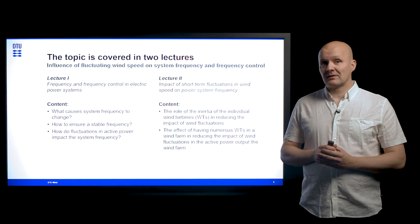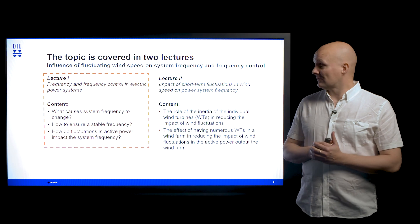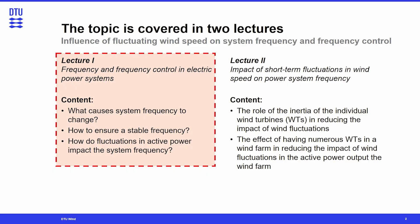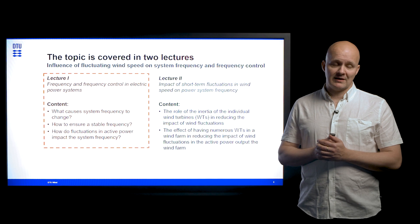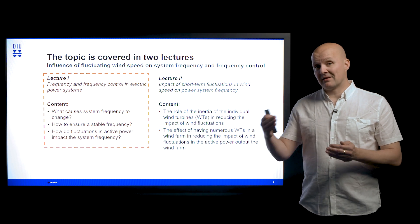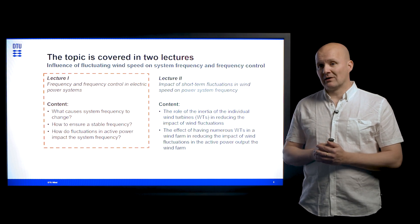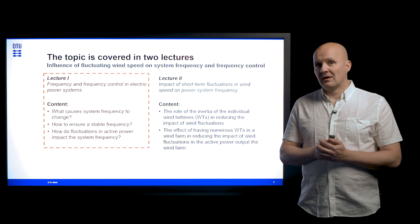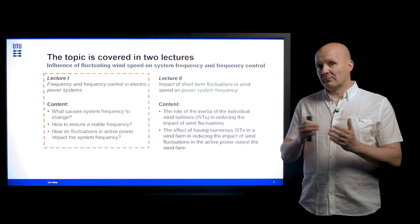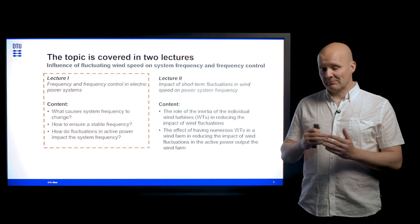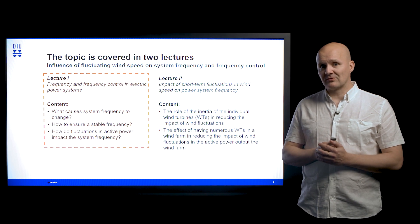In this first lecture, we will address frequency in power systems — that is, what causes system frequency to change, and also how to ensure that we can keep a stable frequency in the system. And then at last, we want to take a look at how fluctuations of active power impact the system frequency. Then in the subsequent lecture, we will turn our focus towards the wind farm and take a look at several system properties there that reduce the impact of wind fluctuations when it comes to system frequency.